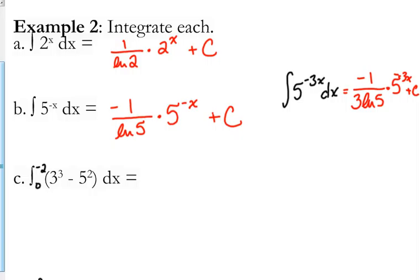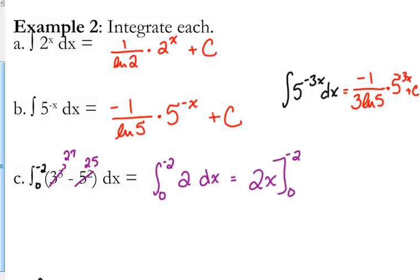What about something like this next one? I don't think they'd really put something like this on the AP exam, but the reason I'm putting it here is to make sure you're not just in repetitive motion of applying this rule to whatever I put on the board. What are we looking at right there? It's just a constant — 3 cubed is 27, 5 squared is 25. So really we are looking at the integral from 0 to negative 2 of 2 with respect to x. The antiderivative of 2 is 2x. This is not even an exponential problem.